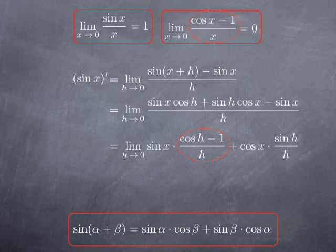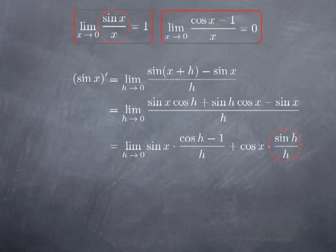On the other hand, (cos h minus 1) over h — we have established that the limit of this when h tends to 0 is 0. As for sin h over h, when h goes to 0, it goes to 1. So each one of these terms has a limit when h goes to 0, and therefore we can use the fact that the limit of a sum is the sum of the limits, provided that all the limits exist, and then we can pull the constant multiples out of the limit.